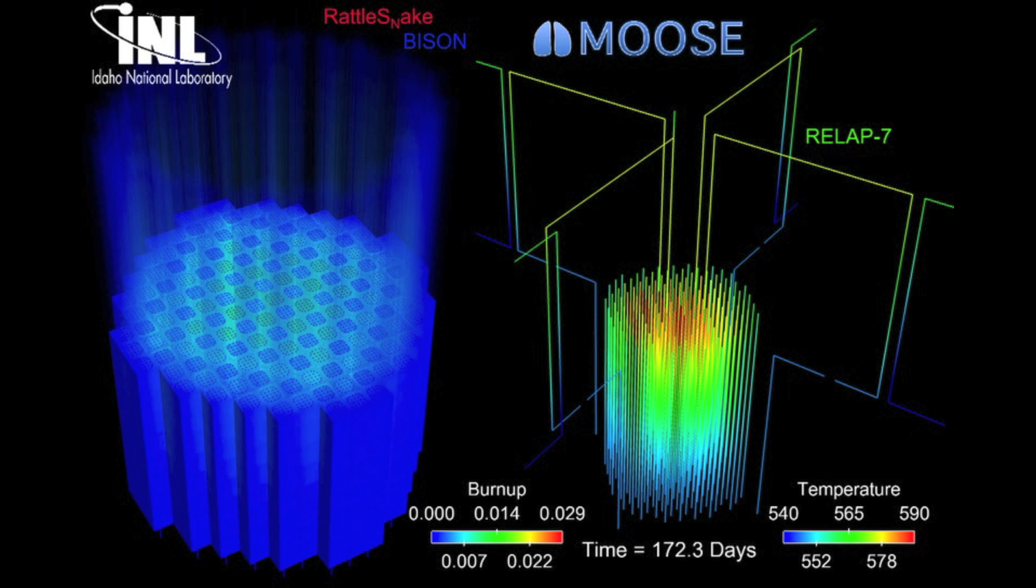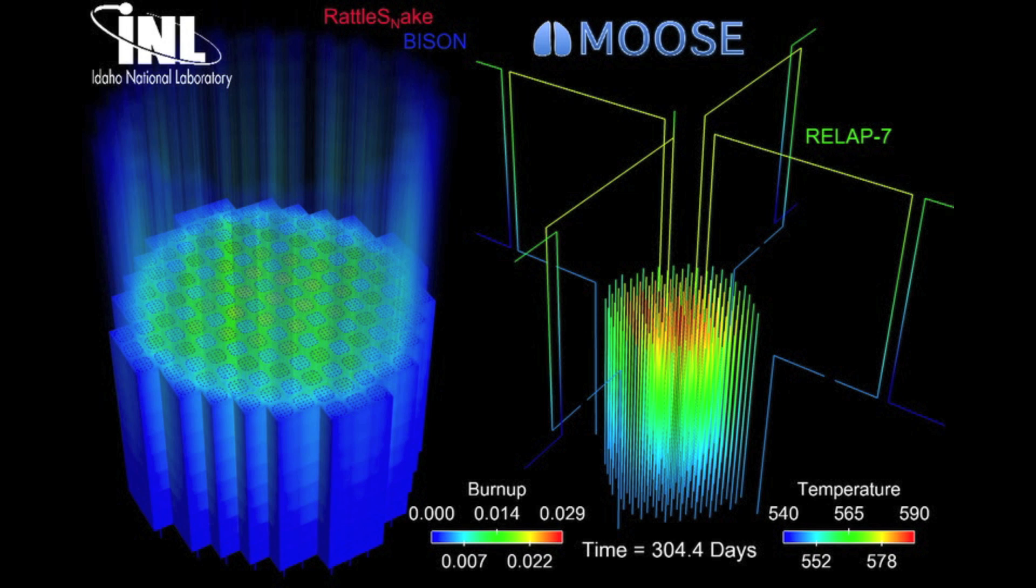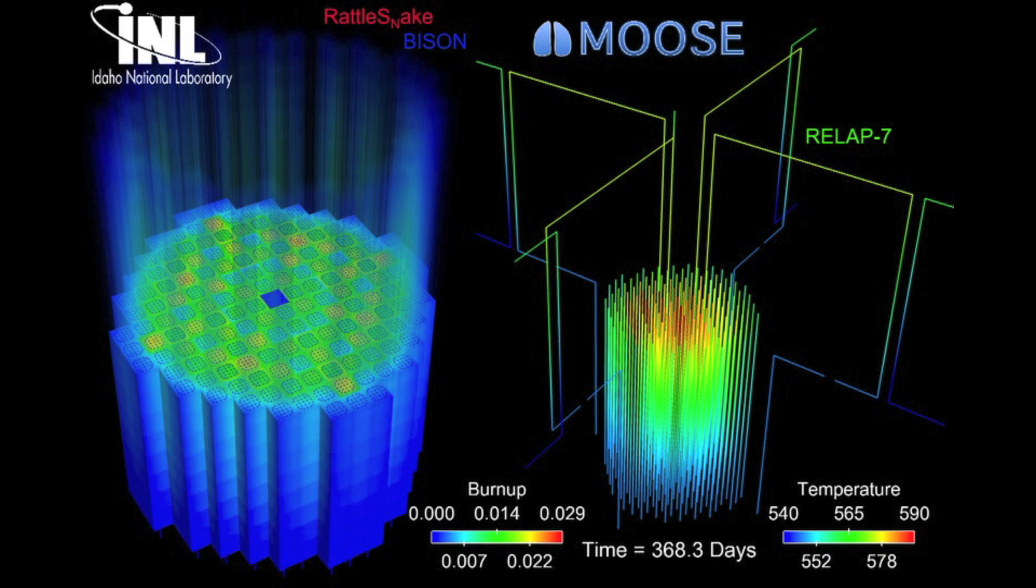On the left-hand side, we're going to be able to watch the burn-up of the fuel. This is showing how much of the fuel has been consumed. Within this simulation, we are starting the reactor up over about a two-day period, and then it's sitting at a constant operating power for a year.